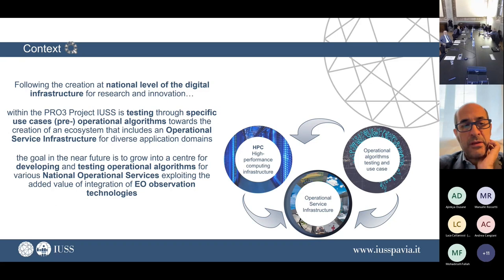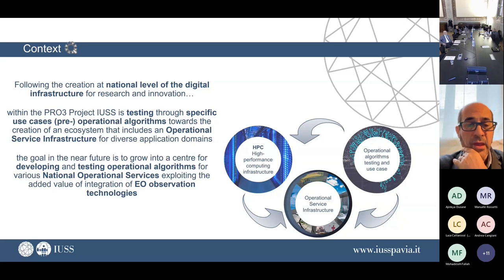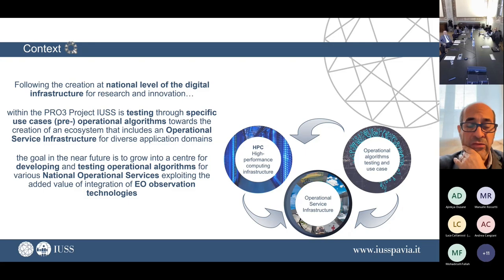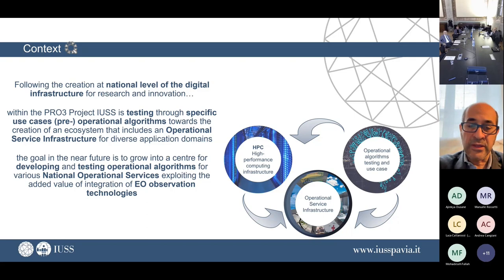At this moment, in Italy especially, thanks to not only the Next Generation EU funding, we are implementing the national digital infrastructure for research and innovation. We are using the Protre project to test some specific use cases that we call the pre-operational algorithms, and these are the base that will create an ecosystem including operational service infrastructure. This is one of the major investments of Next Generation EU right now in Italy, going to be around 4.5 billion for the downstream services. It's not only the HPC high-performance computing infrastructure, but really creating an environment for operational algorithms, test cases and building up the downstream service infrastructure for Italy.